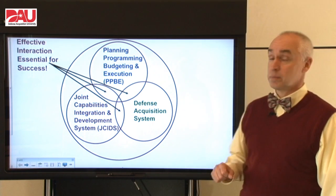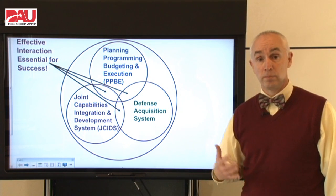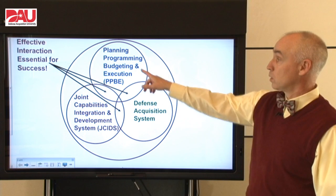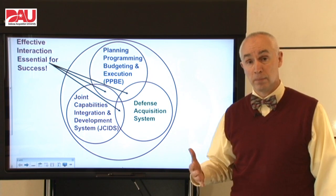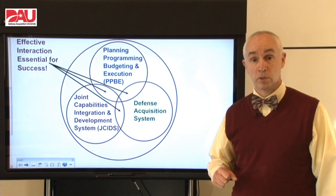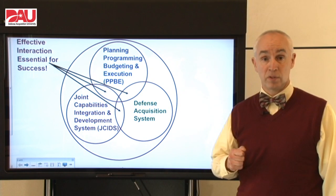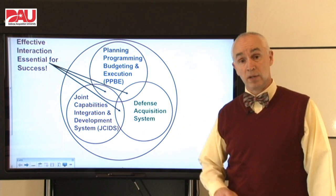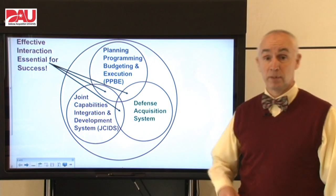The Defense Acquisition System cannot operate properly unless it has good interaction with two other major defense support systems: Planning, Programming, Budgeting, and Execution, which is how we get our money, and the Joint Capabilities Integration and Development System, which is where the users, the warfighters, document their requirements or their capability needs. So we're not going to start a program unless we have a capability need, and we're not going to have a program unless we have money.